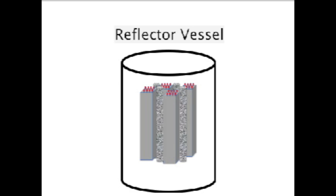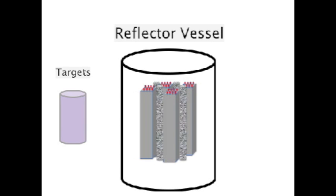The reactor core is located within the reflective vessel. Placed within the reflective vessel are the radiation facilities containing targets used for fission and neutron activation. There are two types of targets in a nuclear reactor for generating radiopharmaceuticals.